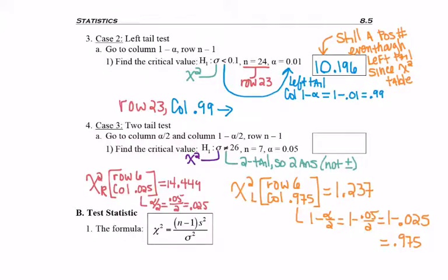As you go to answer, don't forget, there's going to be two answers. We usually list the smaller answer first and then the larger answer. And you want to be sure that it doesn't make it look like it's the range of all numbers in between. It's not the 1.237 up to 14.449, it's just those two individual numbers.